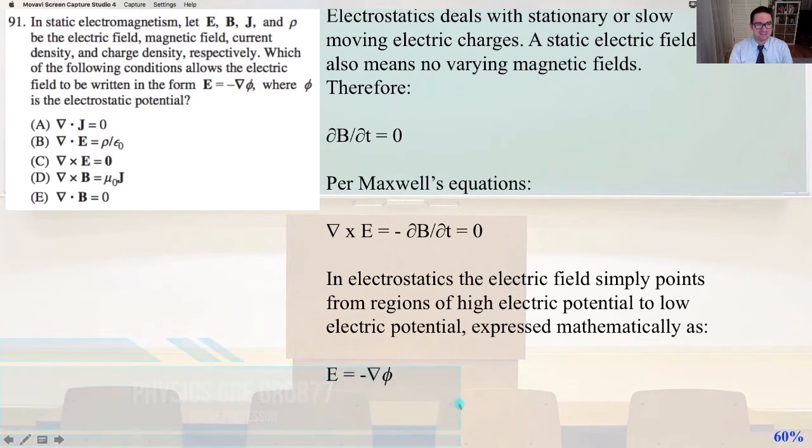Homestretch, in static electromagnetism, let E, B, J, and Rho be the electric field, magnetic field, current density, and charge density, respectively. Which of the following conditions allows the electric field to be written in the form E equals minus del phi, where phi is the electrostatic potential?